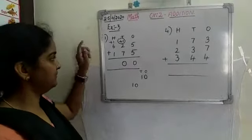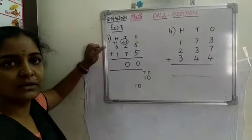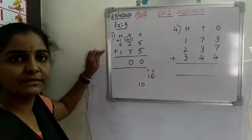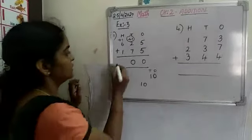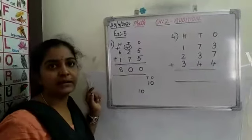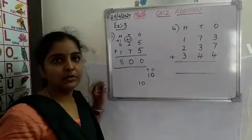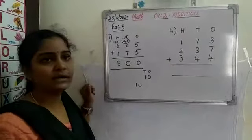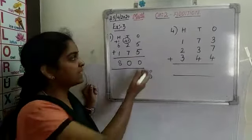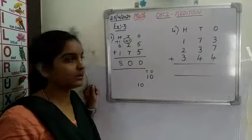Now see here we are having 6 plus 1 plus 1. So 6 plus 1 is 7 and 7 plus 1 is 8. So our answer is 800. 800 — we call it the sum or total. So this we call it as regrouping: whenever we are having the carry over numbers, we call it as regrouping.